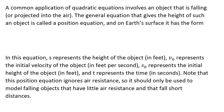The general equation that gives the height of such an object is what we call a position equation, and on Earth's surface it has the form s equals negative 16t squared plus v sub o times t plus s sub o. We actually also call that v naught and s naught.